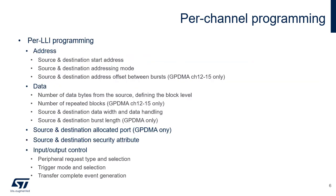For each LLI, the user has to program the source and destination address, as well as addressing modes and address offsets between bursts in 2D mode. The information related to the data transfer includes block size, source and destination data width, and data handling. The GPDMA supports additional settings: number of repeated blocks for channels 12 to 15 and burst length for all channels. Regarding the GPDMA, the AHB port used to access the source and destination locations has to be chosen. The security attribute is also selectable when the channel itself is programmed as secure.